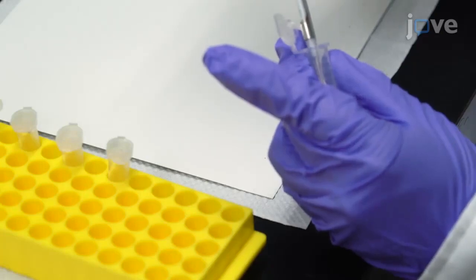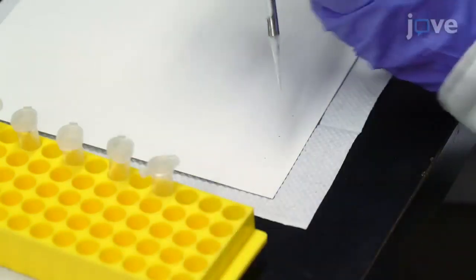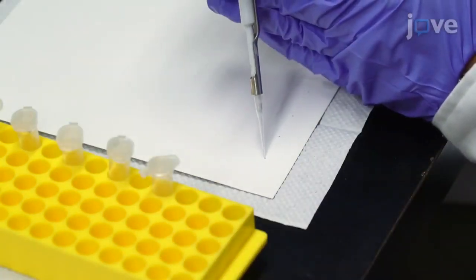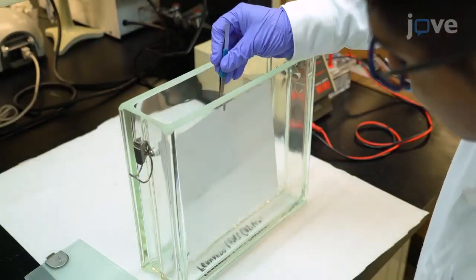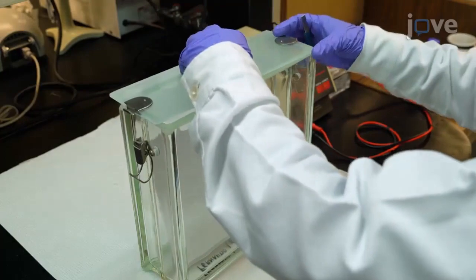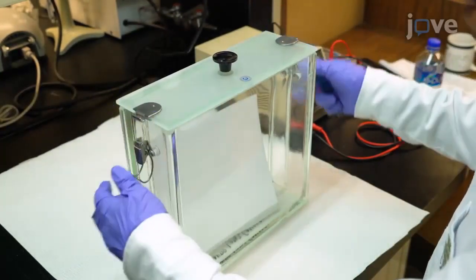First, apply 1 microliter of the previously prepared caffeine extract to the silica gel plates. Then, develop the TLC in the chromatography chamber with 10 milliliters of the mobile phase cyclohexane acetone.